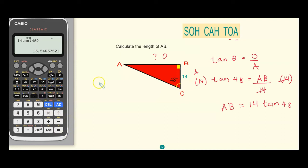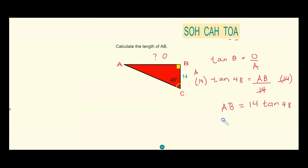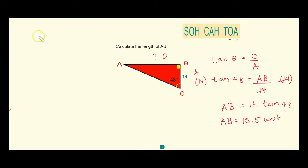Rounding to one decimal place, that's 15.5. So side AB equals 15.5. There's no unit given for 14, so we don't need a specific unit — we could just write 'units'. So that's your side AB.